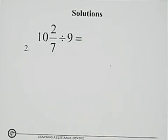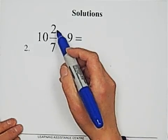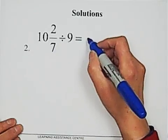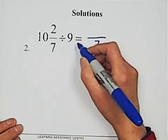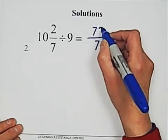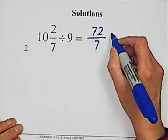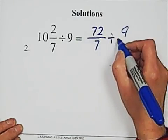Second solution. 10 and 2 over 7 divided by 9. 72 over 7 divided 9 over 1.